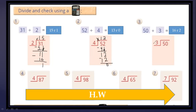50 divided by 3: 5 divided by 3 equals 1; 1 multiplied by 3 equals 3; subtract 2, bring down the 0. Now 20 divided by 3 equals 6; 6 multiplied by 3 equals 18; the remainder equals 2. The quotient equals 16 and the remainder equals 2.